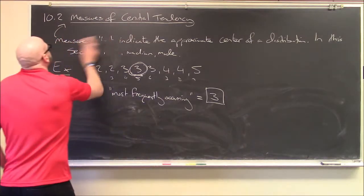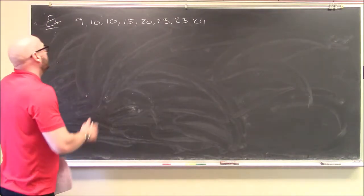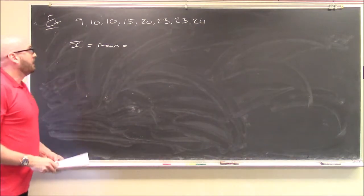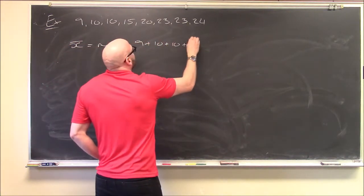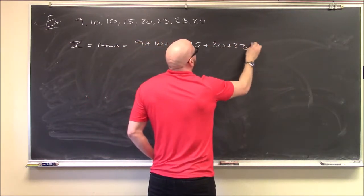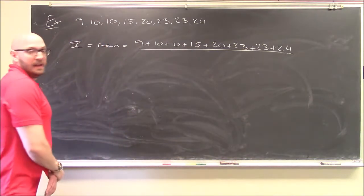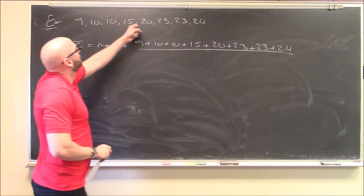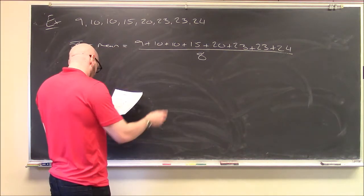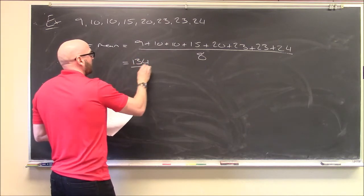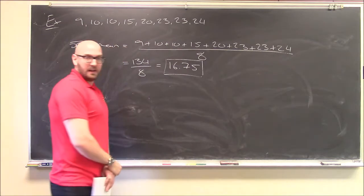Let's do another example with different numbers. I want to find the mean, the median, and the mode. For the mean, x-bar: I add all the numbers together and divide by the total number of elements. So 9 plus 10 plus 10 plus 15 plus 20 plus 23 plus 23 plus 24, divided by 8 elements. Adding those gives 134 over 8, which is 16.75.